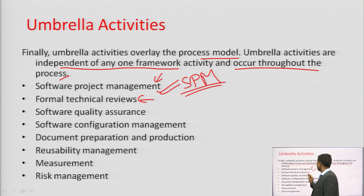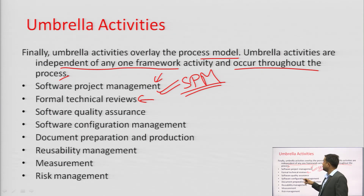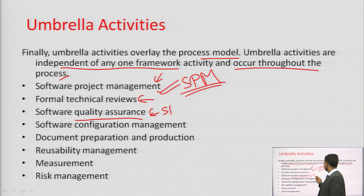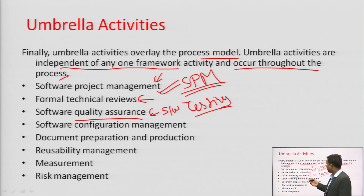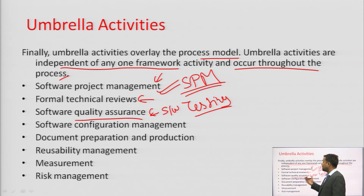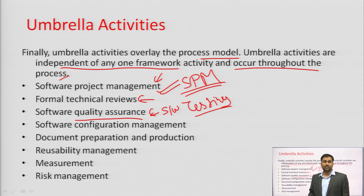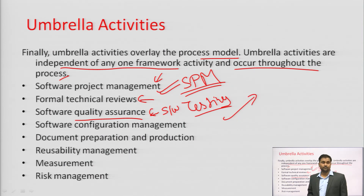Formal technical reviews — all our code and technical documents are formally reviewed technically, also as part of testing. Software quality assurance is also part of software testing. Through multiple ways of testing — unit testing, integration testing, performance testing — we assure quality. The tester team finds bugs, developers fix them, this cycle repeats multiple times. Each bug fix continuously improves quality.